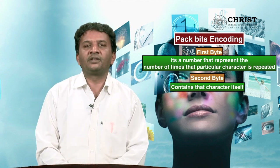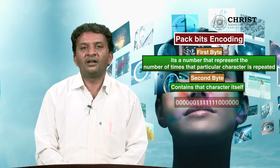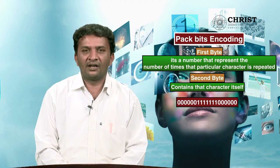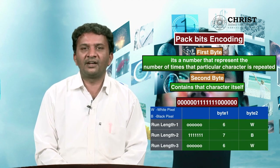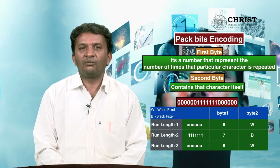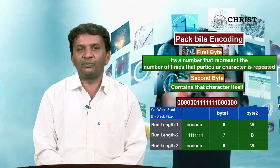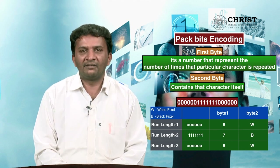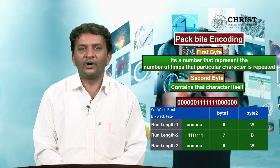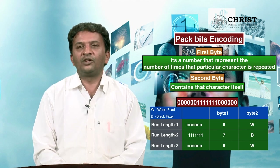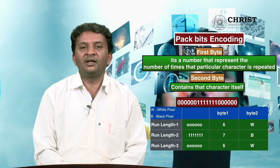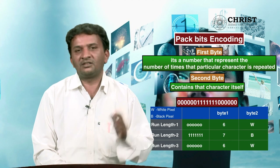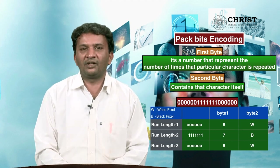For example, take a string with three run lengths. The first run length has six zeros, so byte 1 contains 6 and byte 2 contains W, where W is nothing but the white pixel value. Similarly, for run length 2, there are seven ones, so byte 1 contains 7 and byte 2 contains B, where B is the black pixel value. Likewise for run length 3. This is the example for binary image compression pack bit encoding scheme.